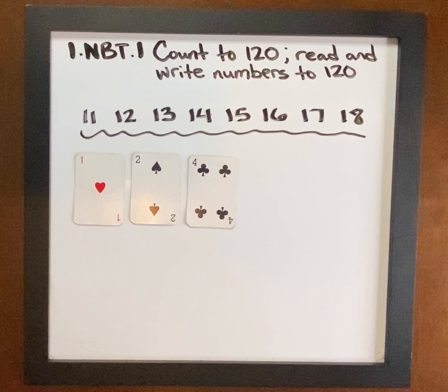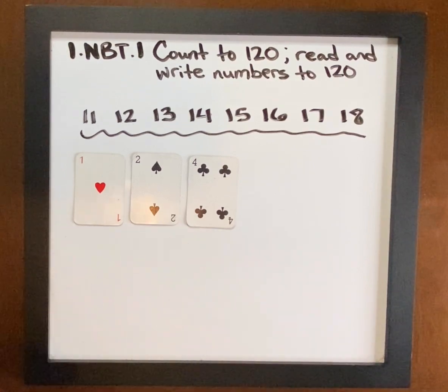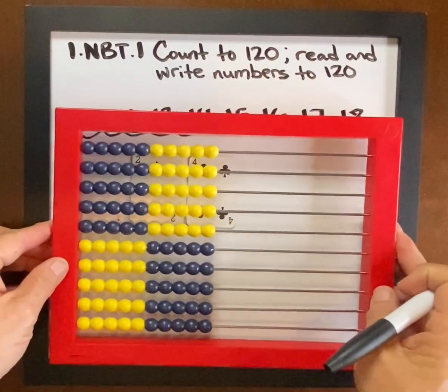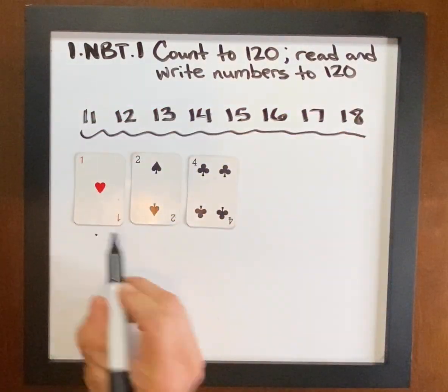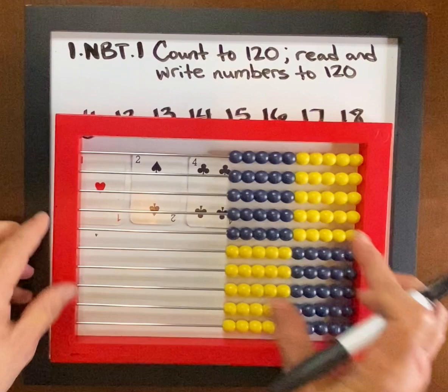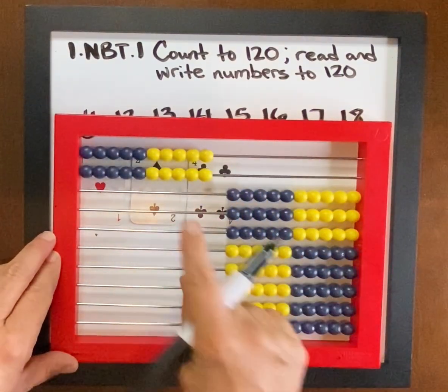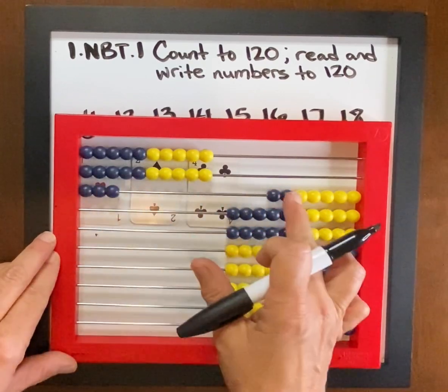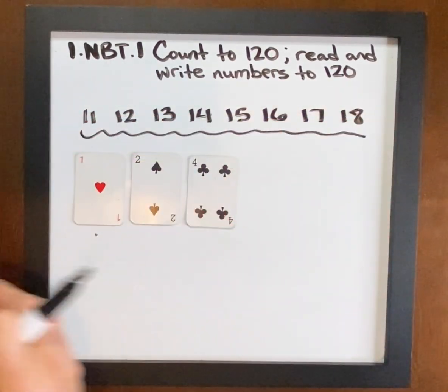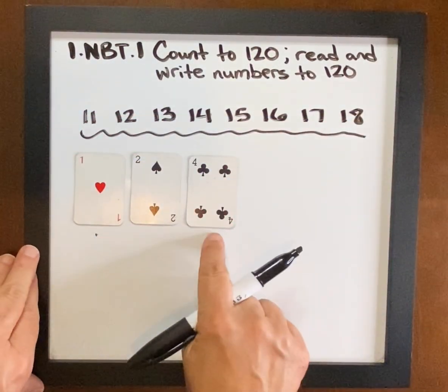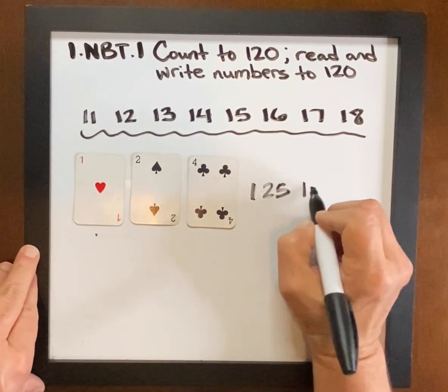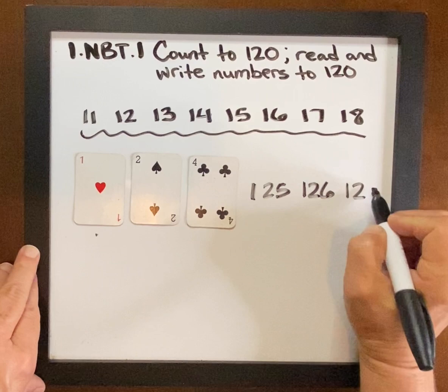Now this one went over 120. That is okay because at this point students are really understanding what this means. So we have 1, 100, 10, 20, 21, 22, 23, 24, 124, 125, 126, 127.